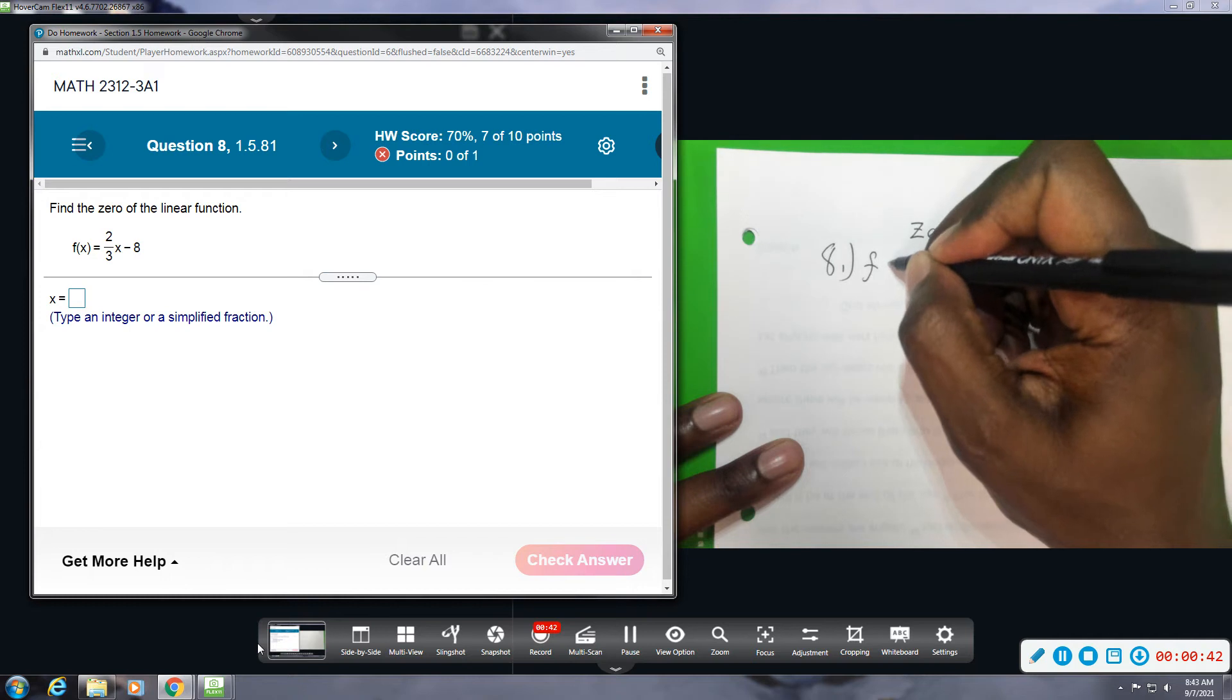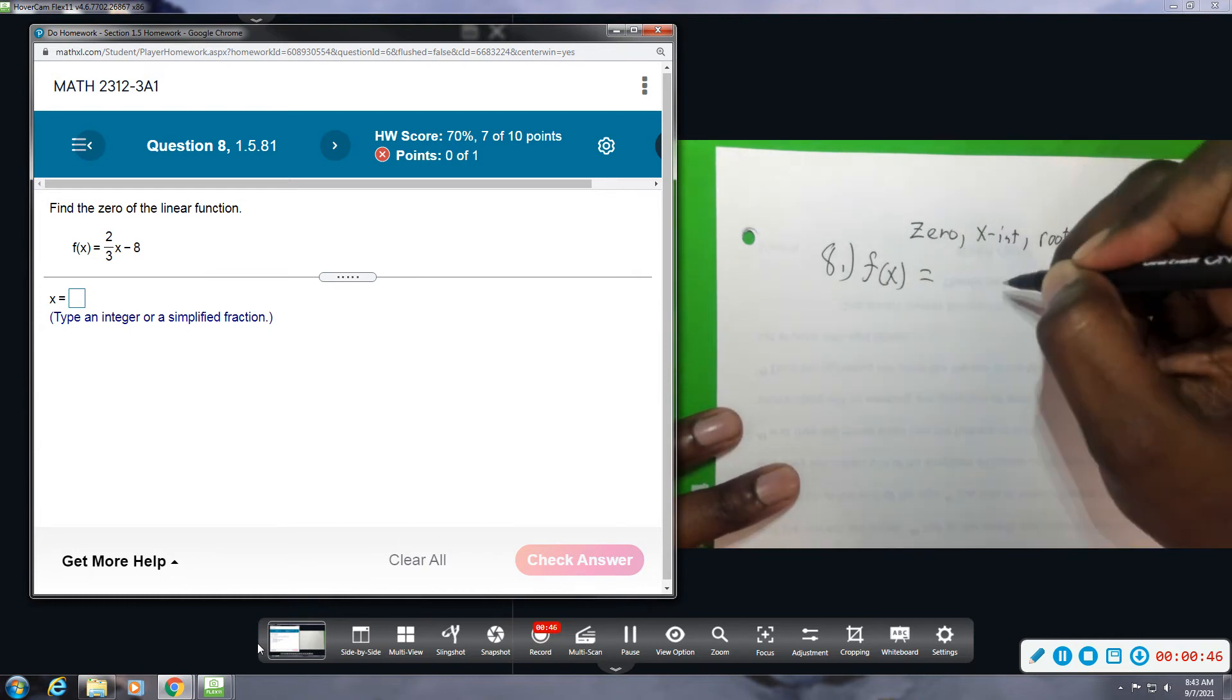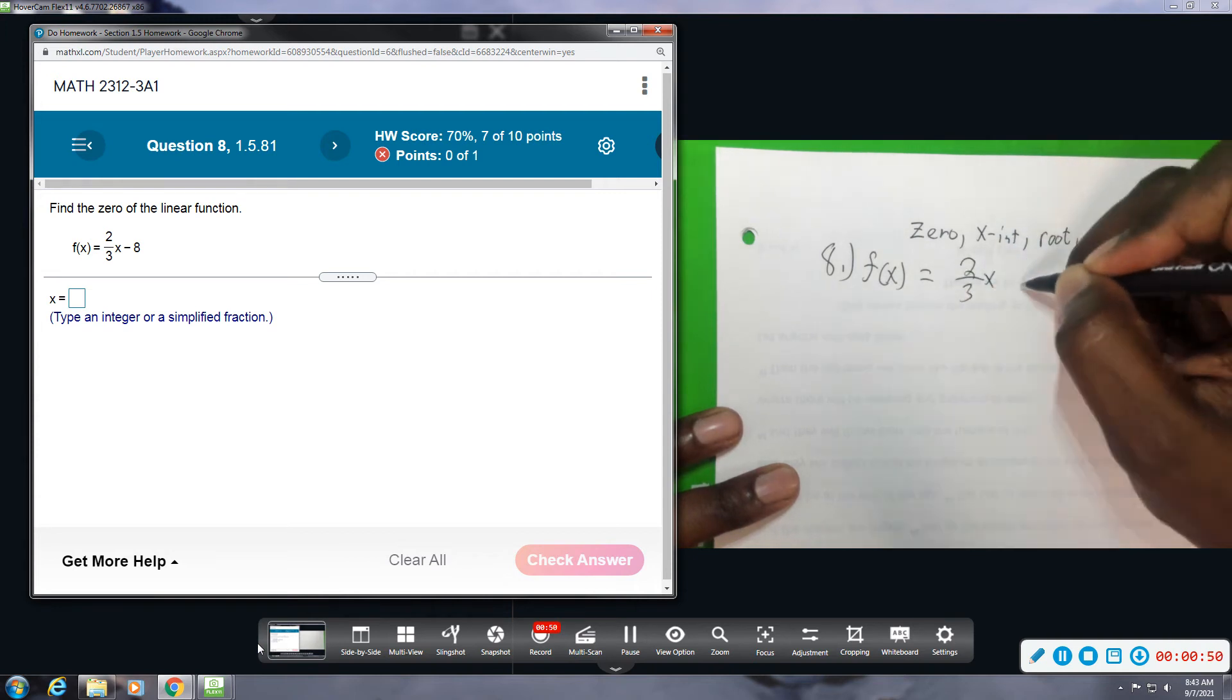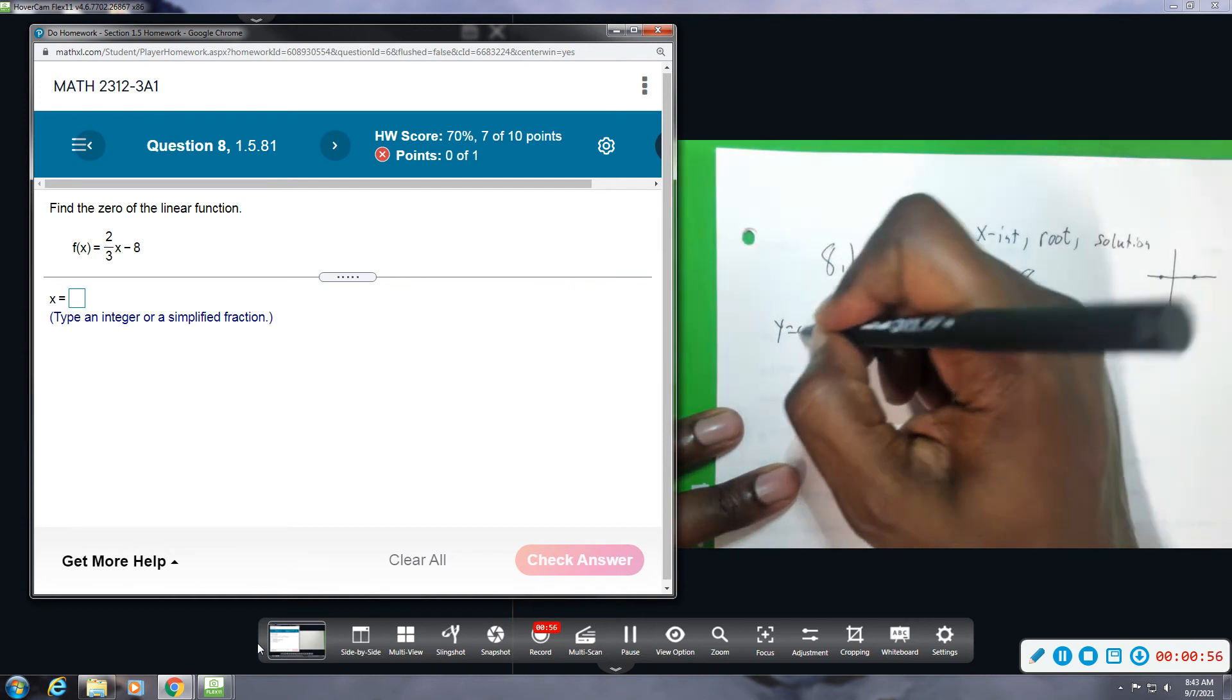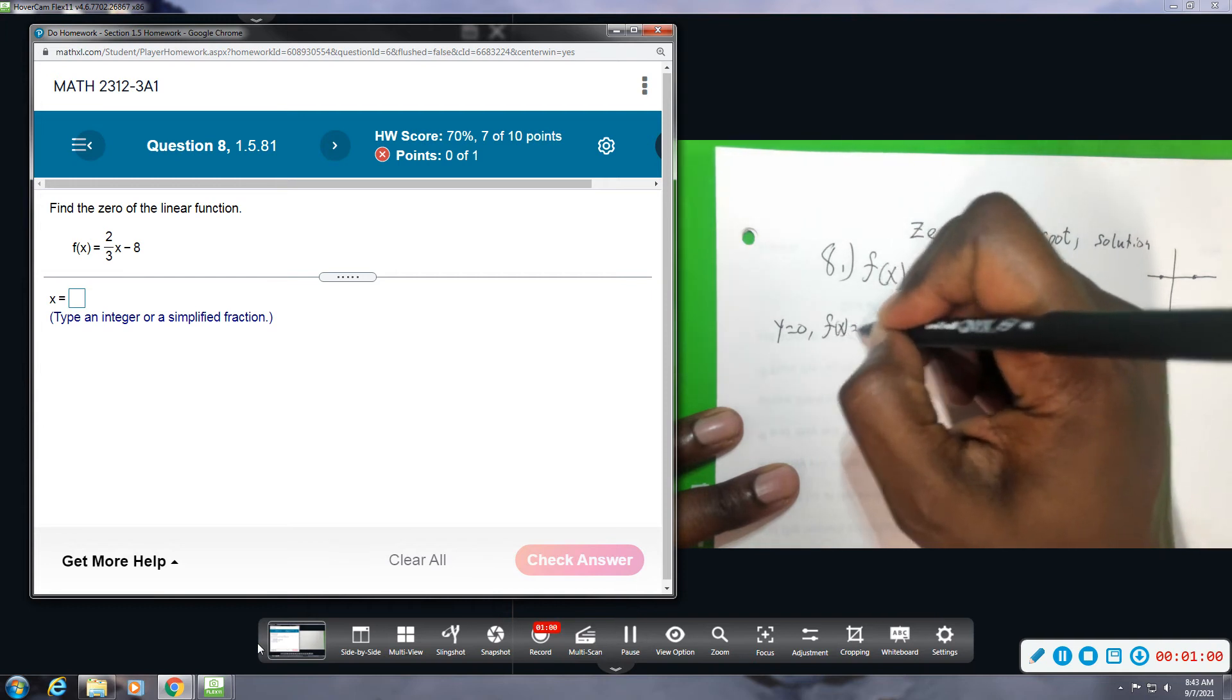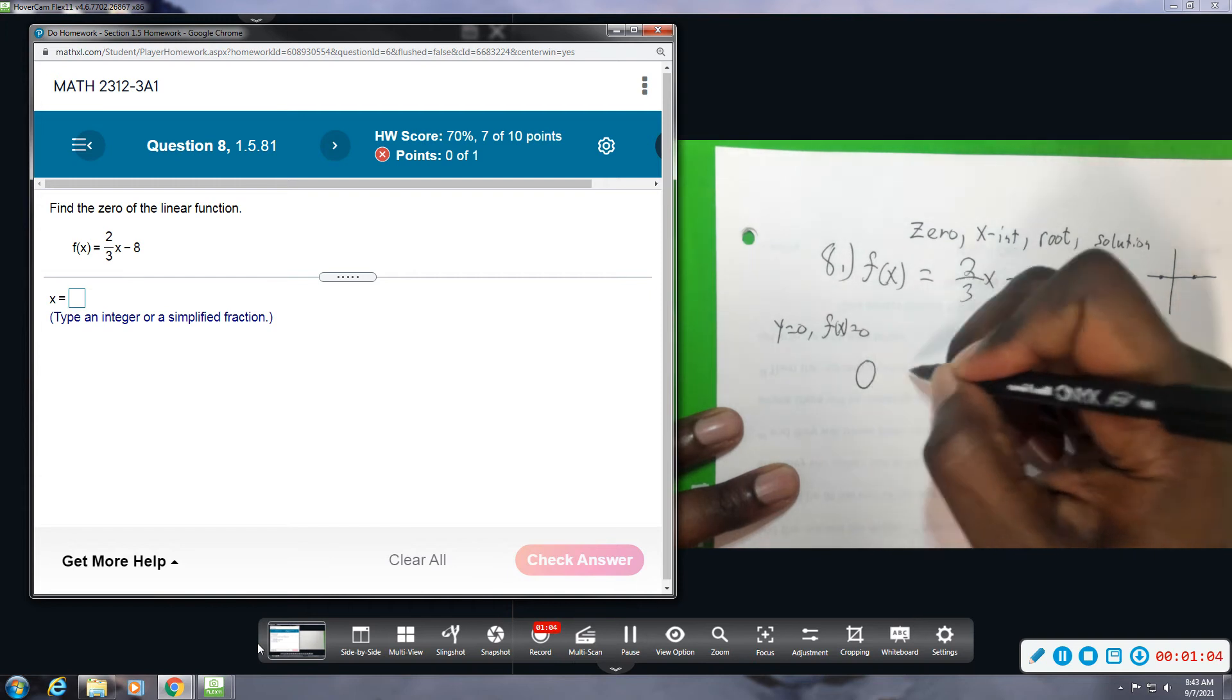So we have f of x is equal to two over three x minus eight. And again, we're going to let y equals zero, or that is the same thing as saying f of x equals zero. So this whole thing right here is going to be zero. Zero equals...